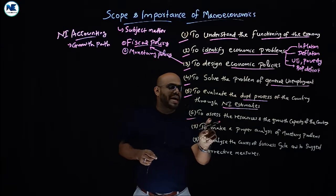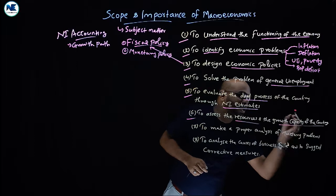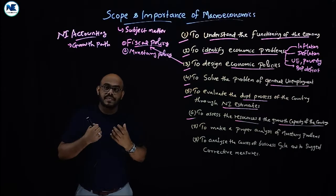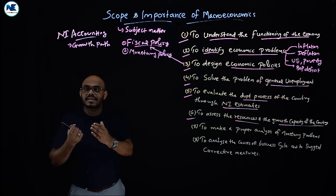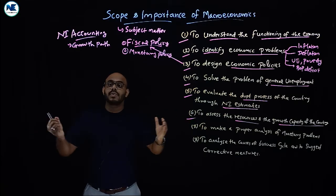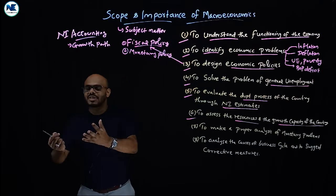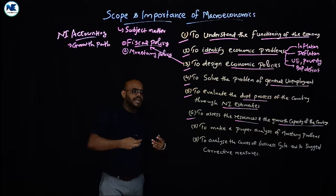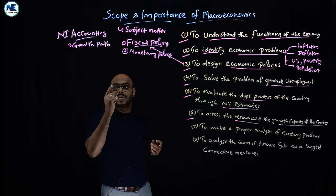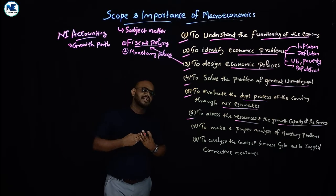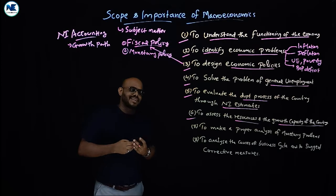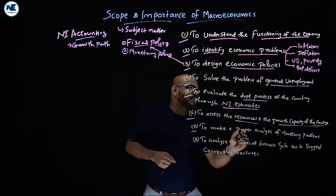The sixth point is to assess the resources and growth capacity of the country. This includes evaluating potential GDP versus actual GDP, and the nation's resource base — natural resources and human resources. Macroeconomics helps assess the total investment, total saving, employment opportunities, and the overall growth capacity of the country — how much potential capacity the economy possesses.